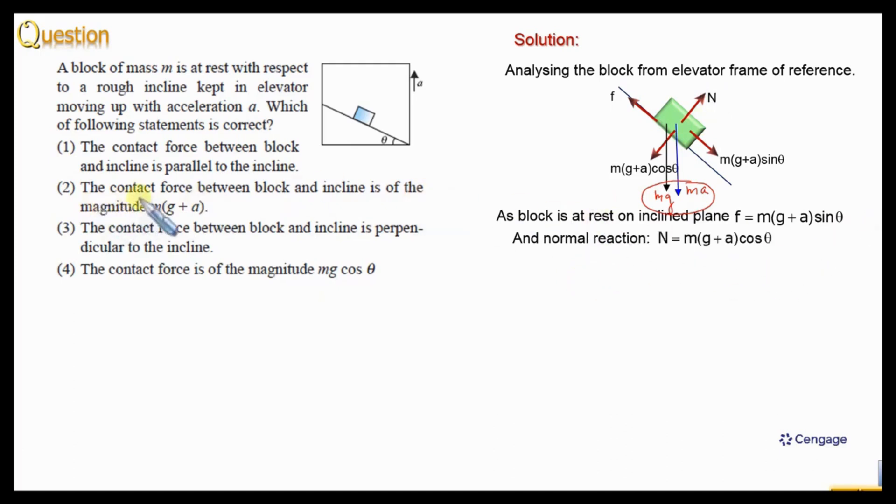Now we need to find the contact force. Contact force is the vector summation of the normal reaction and friction force. So here we can write n net equal to under root f squared plus n squared.